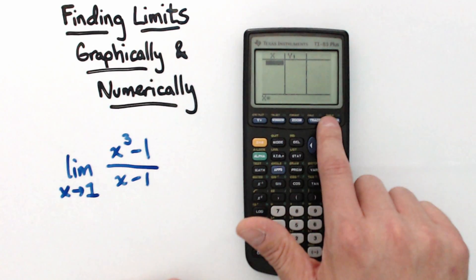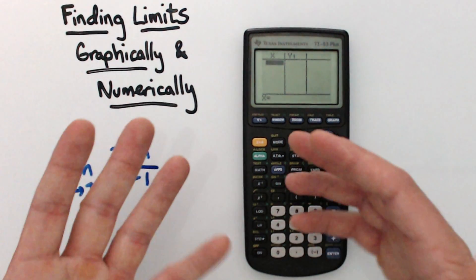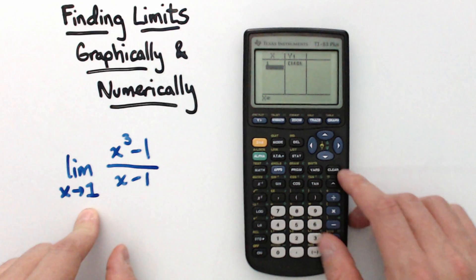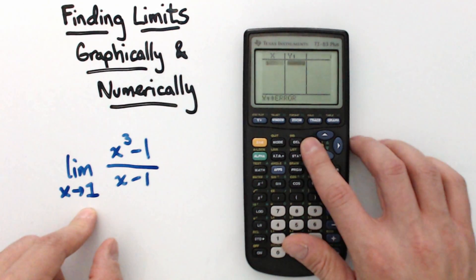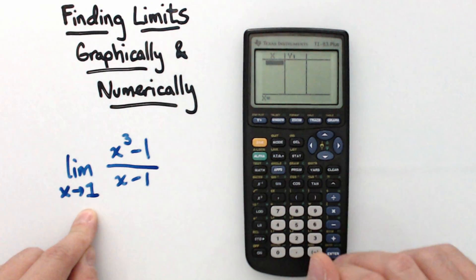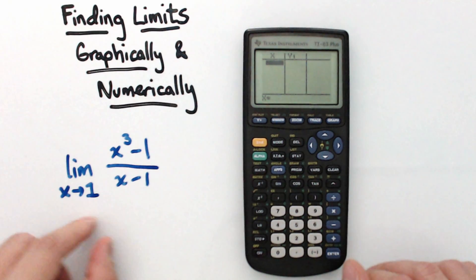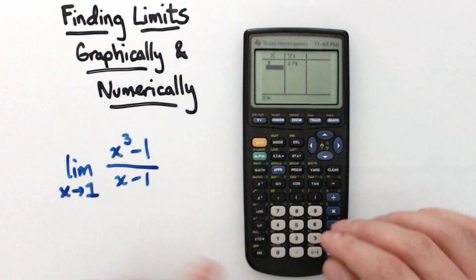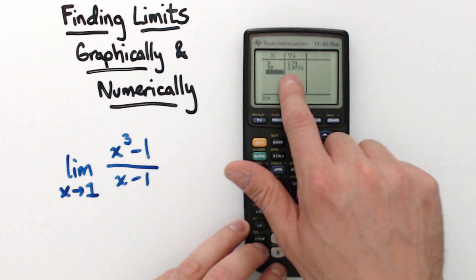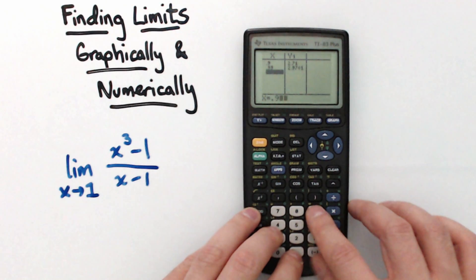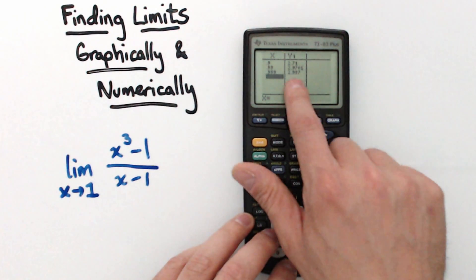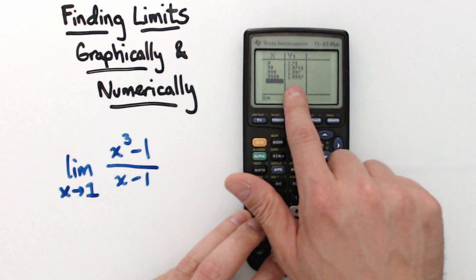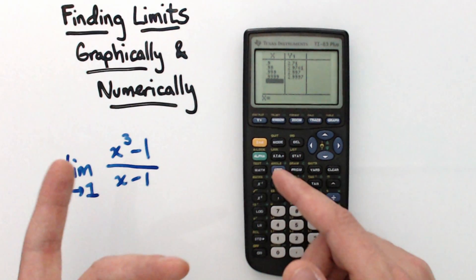Now go back to Second Table and the table is blank — it's asking us which x to enter. First I'll type 1, and we get an error, as expected. Now I'll enter values approaching 1 from the left: 0.9 gives 2.71; 0.99 gives 2.9701; 0.999 gives 2.997; 0.9999 gives 2.9997. The values are getting really, really close to 3 from the left side, which matches what we saw graphically.